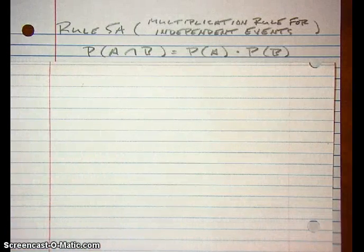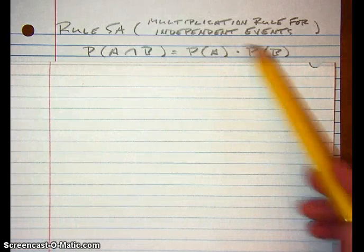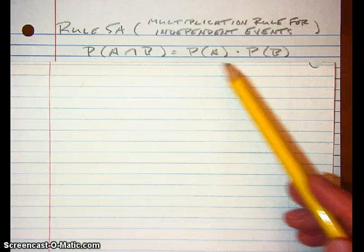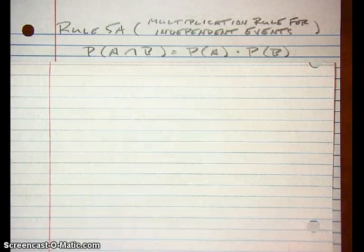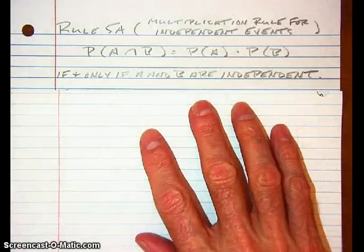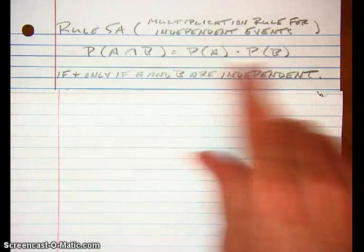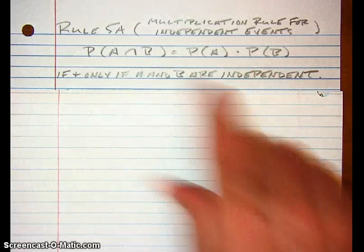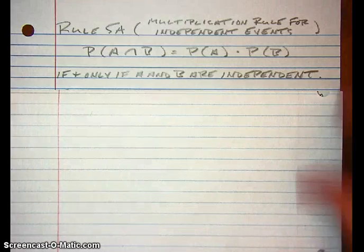If you have independent events, there's a rule called the multiplication rule for independent events. It relates the probability of A and B to the probability of A and the probability of B. You simply multiply the probability of A times the probability of B to get the probability of A and B. This rule is true if and only if A and B are independent. If A and B are independent, this equation is true; and if this equation is true, you can conclude that A and B are independent. So it works both ways.